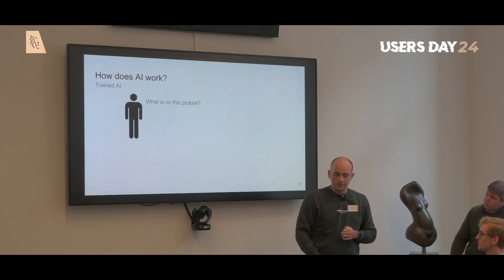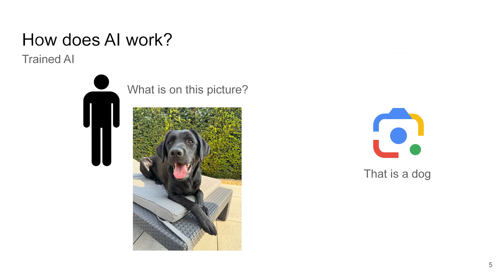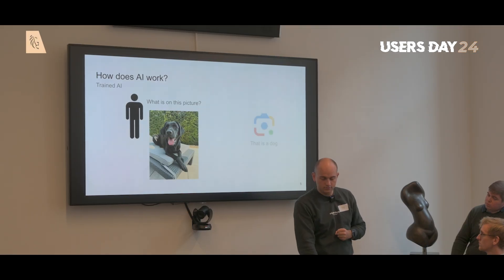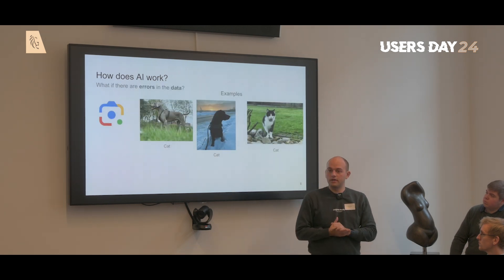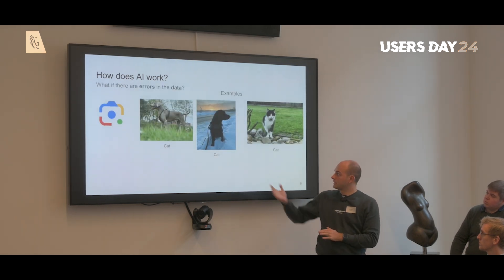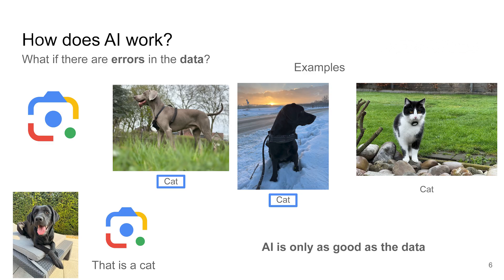Once we have our trained AI, we can show it a picture it has never seen before — say, another dog — and Google Lens will say this is a dog. But what would happen if there are errors in this dataset? If I change the labels from two pictures of a dog to cat, then Google Lens will say this is a cat. I can tell you this is wrong because I checked this morning — she said woof woof, not meow meow. So it's definitely a dog.